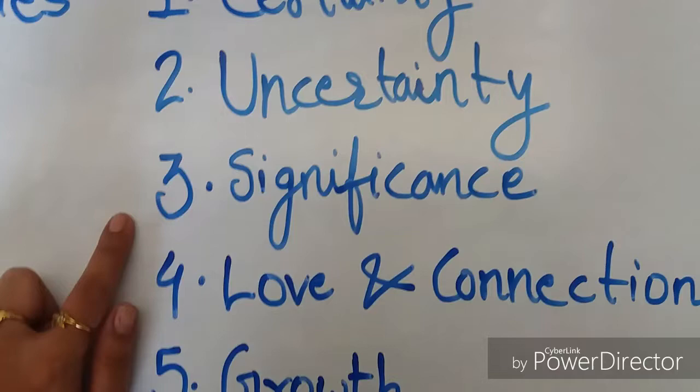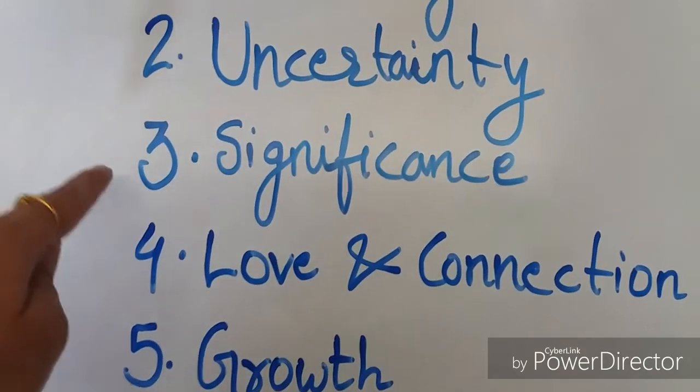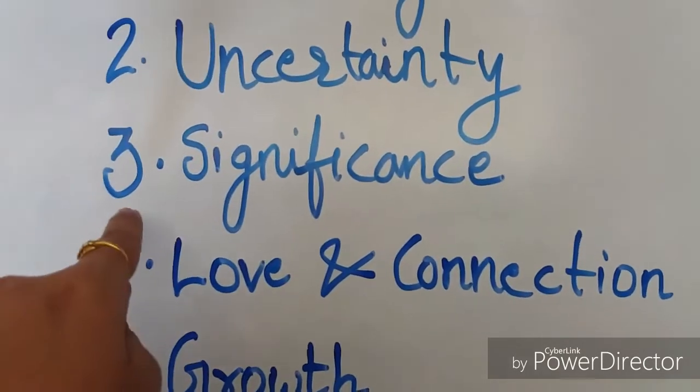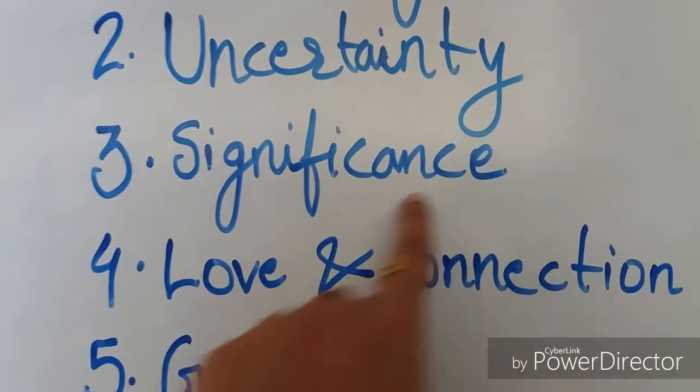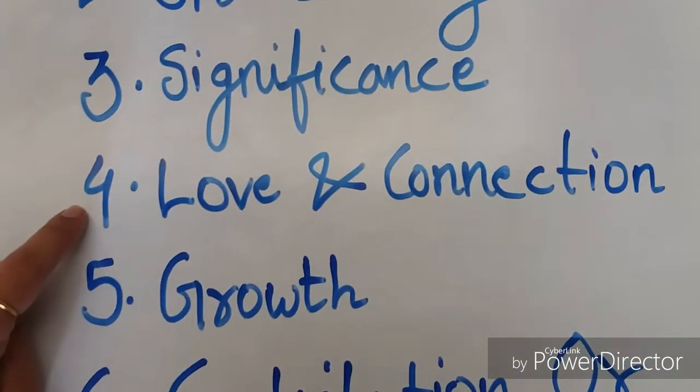Then third is significance, that is mahatva. Even a small child when he falls down, he sees around if somebody is watching him. And if he notices that somebody is watching him, then he starts crying. That is, the person wants significance or importance or attention in his life.